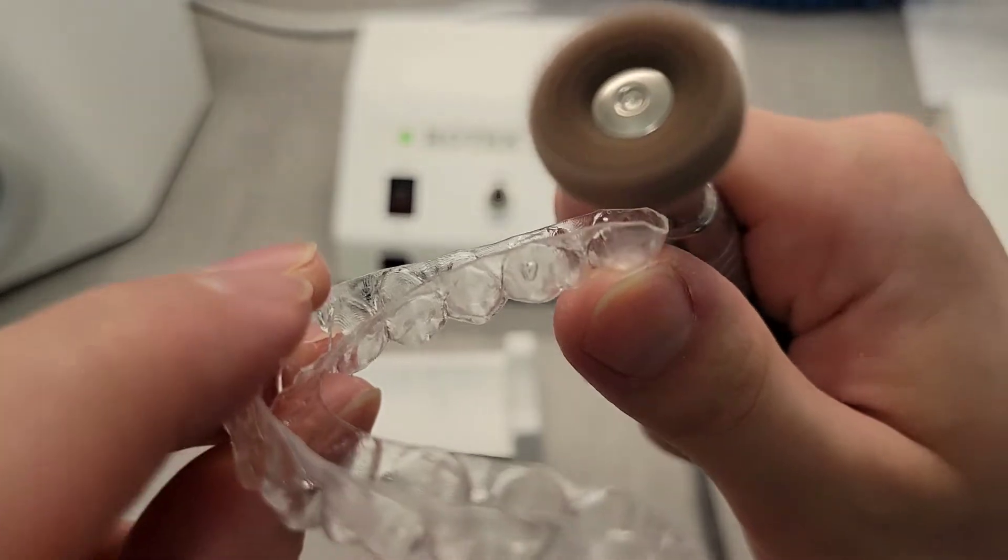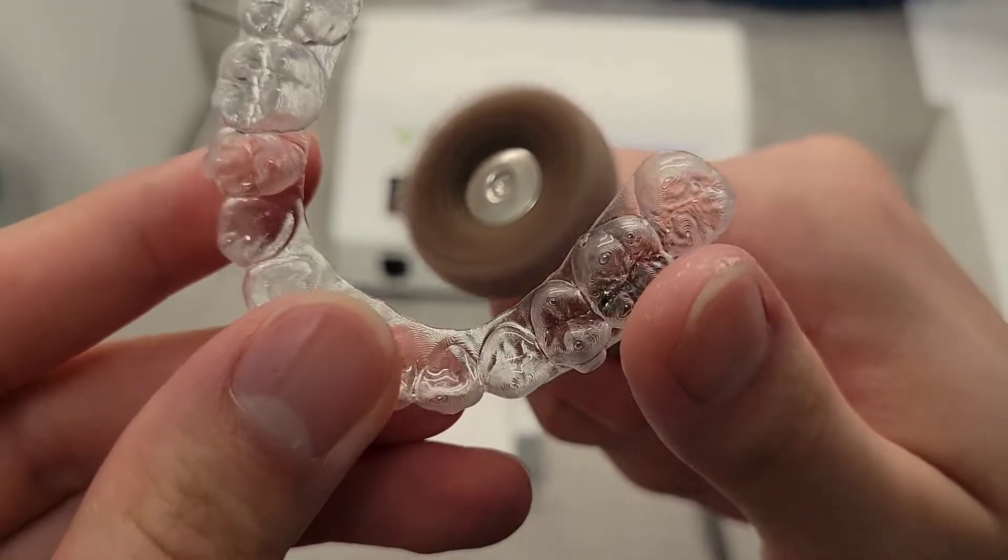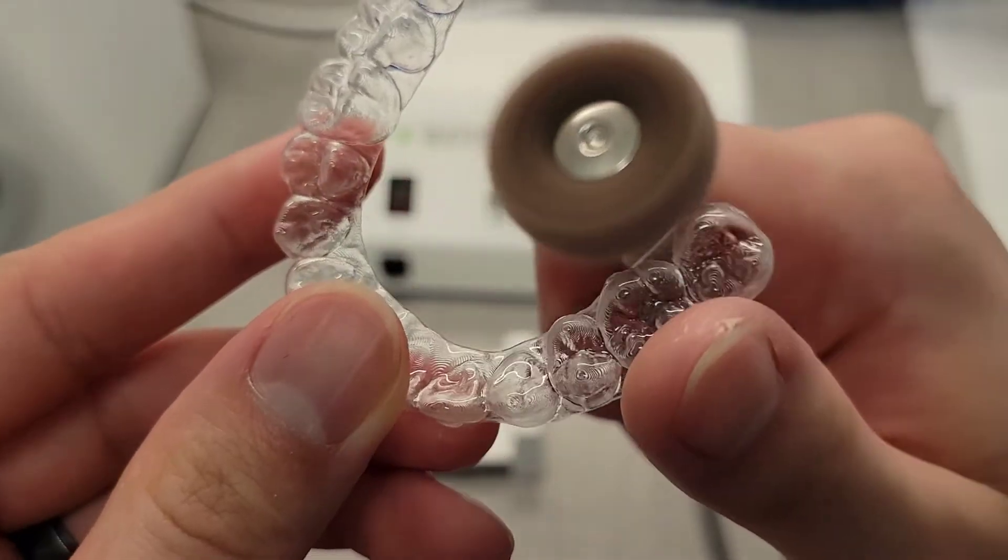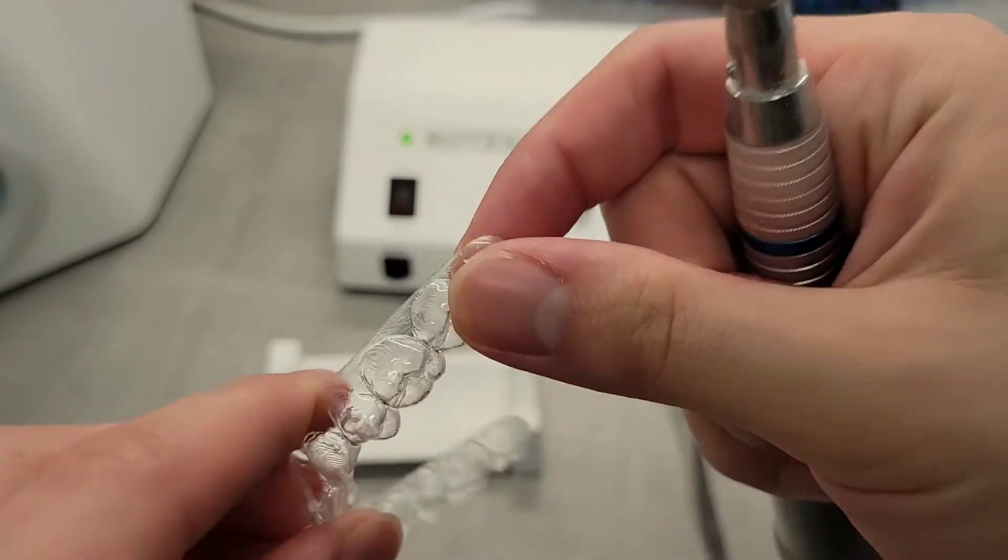For the back molars, support the aligner with your thumb and run the burr along, following the curves of the trim. Remember that the smoother you trim, the less you need to polish. The polishing process should not exceed more than 5 to 10 seconds.